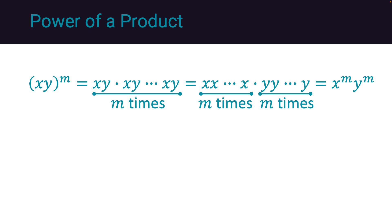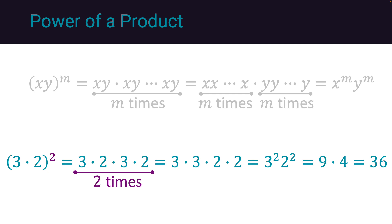As an example, 3 times 2 to the power 2 is equal to 3 times 2 twice. We can reorganize the 3's and 2's to obtain 3 to the power 2 times 2 to the power 2. Finally, this is equivalent to 9 times 4, or 36.